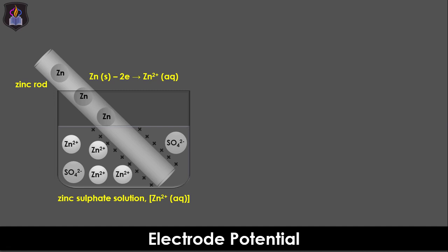Meanwhile, the electrons lost by the atoms are left on the surface of the metal rod, making the electrode electrically negative. Hence, a potential difference is established between the zinc electrode and the zinc ions electrolyte.